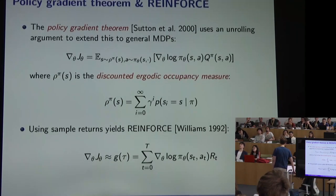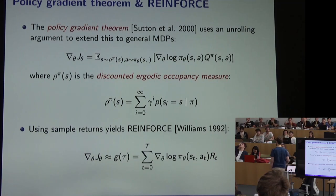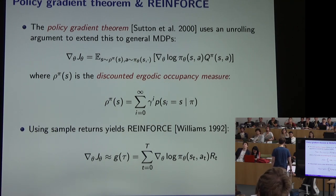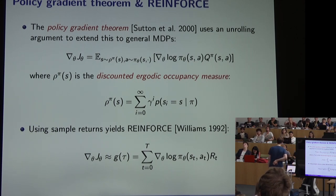The policy gradient theorem extends that idea to a full MDP where we have an episode that lasts more than one time step. The expectation then becomes with respect to this discounted ergodic occupancy measure, which again we can estimate using sample returns.